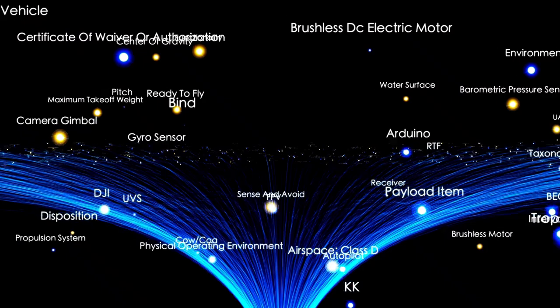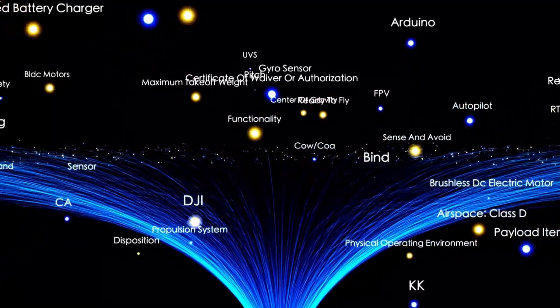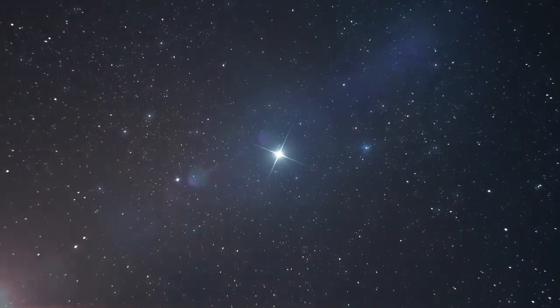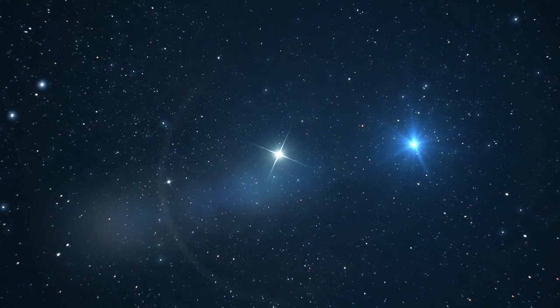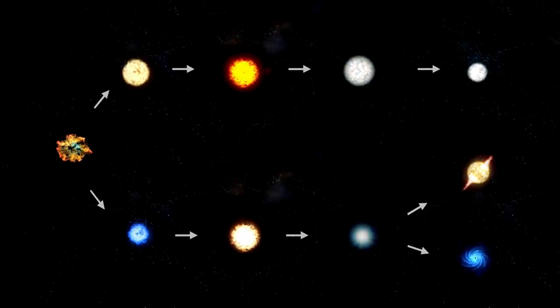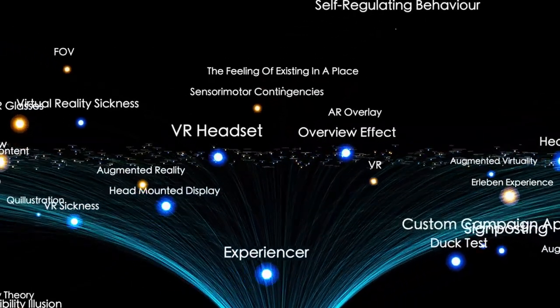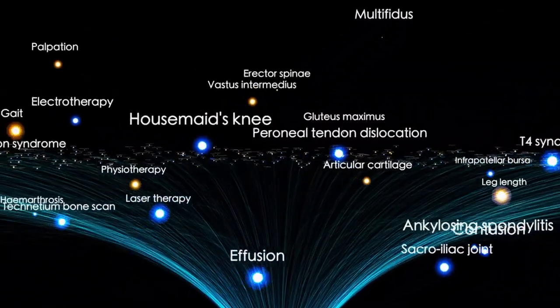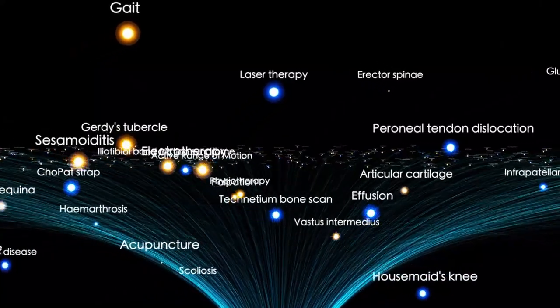This event has also reignited questions about the internal mechanics of red supergiants. These stars are extremely difficult to model because of their immense scale and the turbulent conditions within them. Betelgeuse has long puzzled scientists with its irregular light patterns, and this sudden brightening adds another layer of complexity. Understanding why this change occurred might help explain not only Betelgeuse's behaviour, but also the life cycles of similar stars.